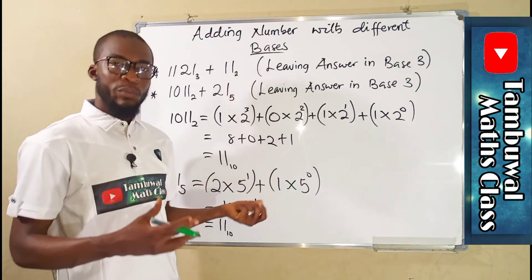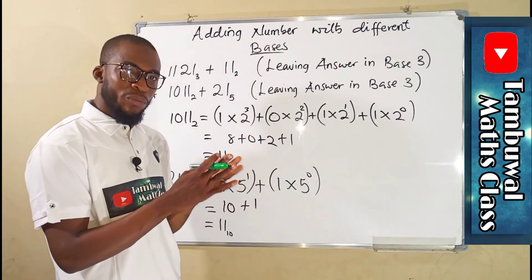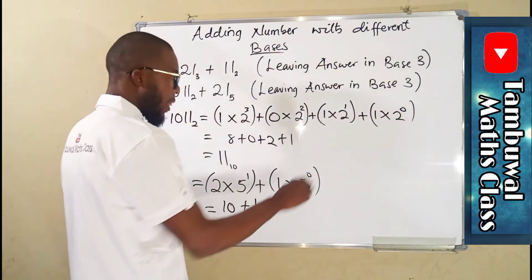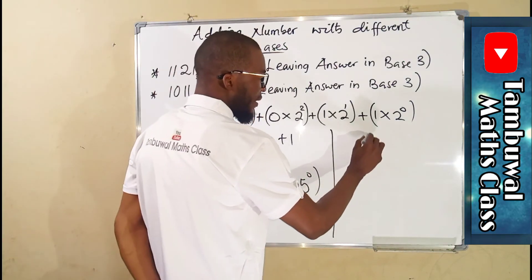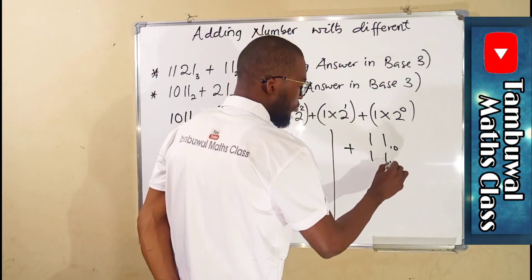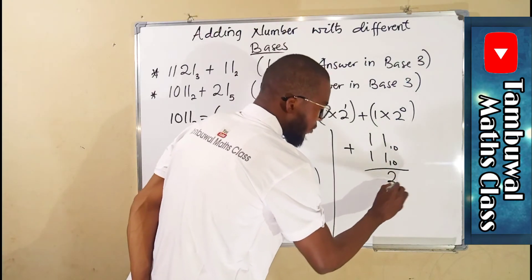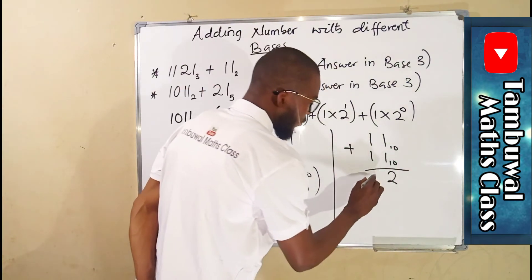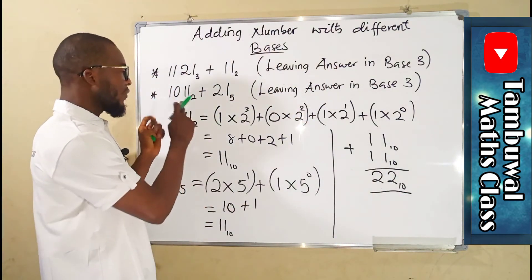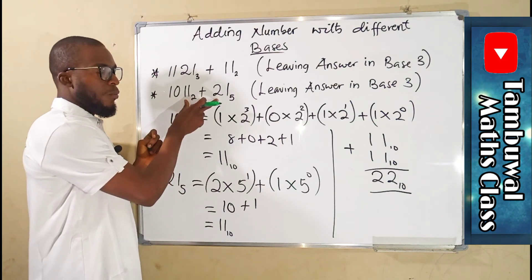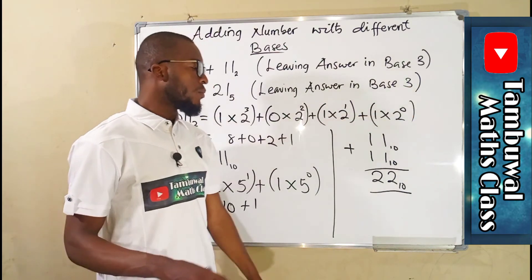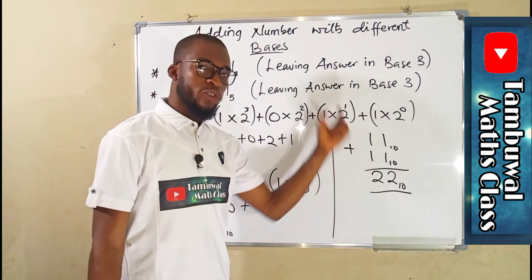Now that we have converted both numbers into base 10, we add them together and convert the result into base 3 as required. We have 11 in base 10 plus 11 in base 10. 1 plus 1 is 2, and 1 plus 1 is also 2, giving us 22 in base 10. But we are not done yet because we now need to convert it into base 3.